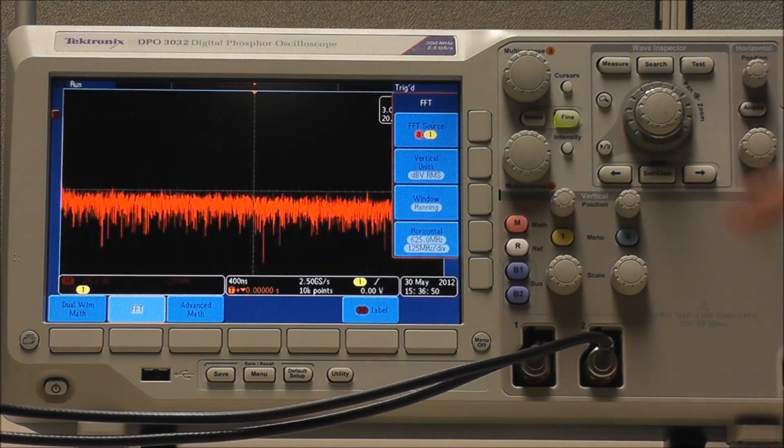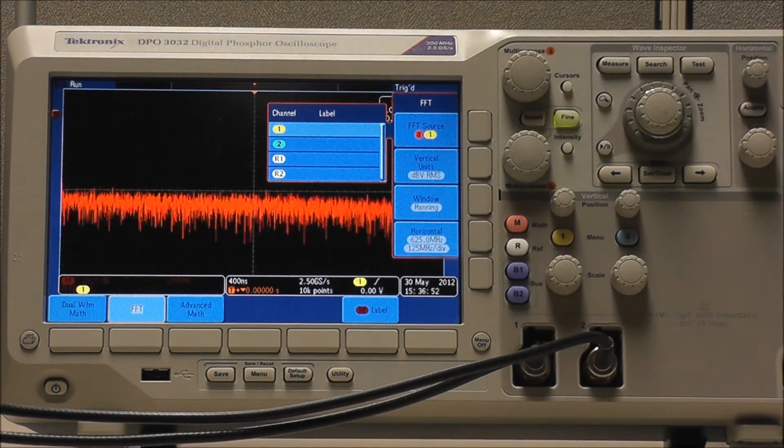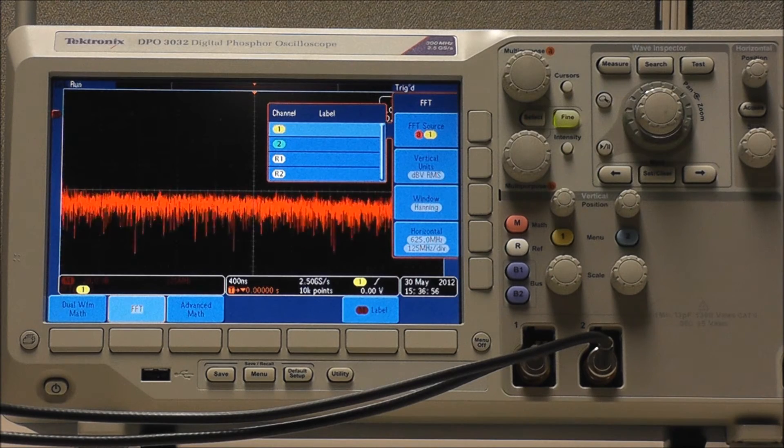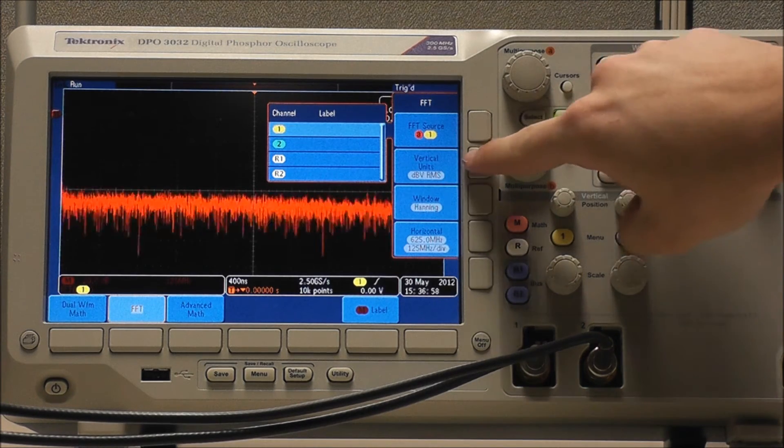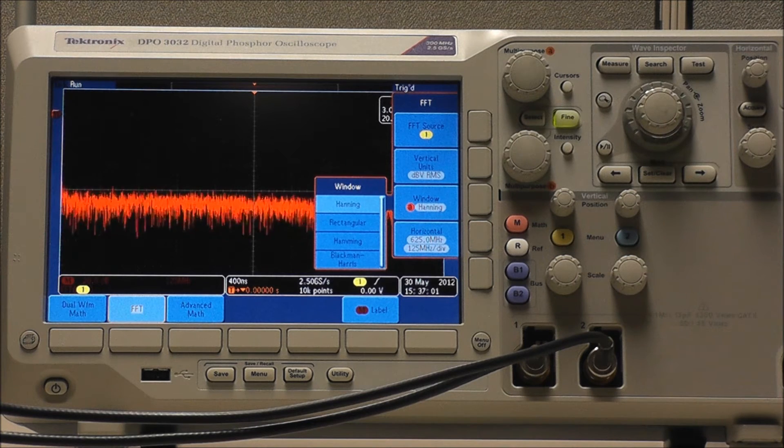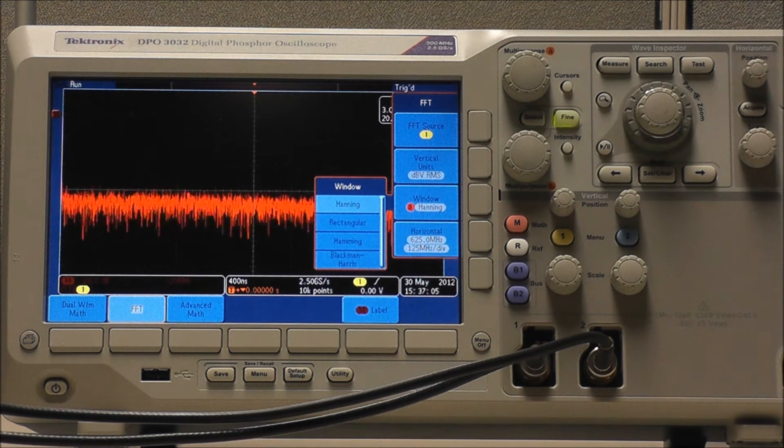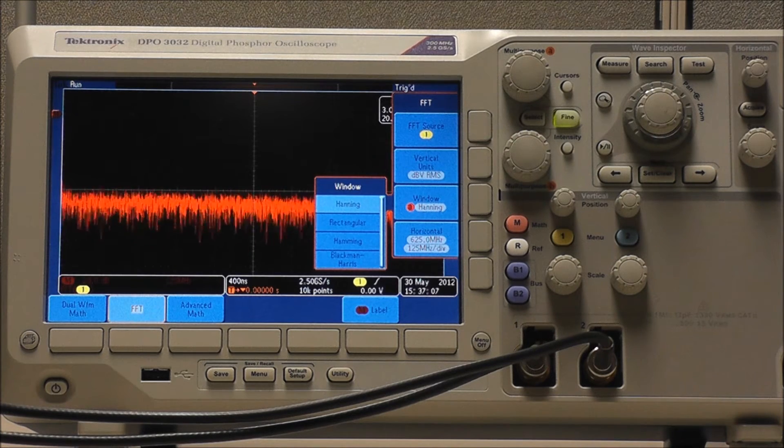Select fast Fourier transform, followed by fast Fourier transform source, and we can use multipurpose A to select our source, which will be channel 1. We also have the option of selecting our units and our window, again using the multipurpose A control. If you'd like to learn more about units and window, you can find a great deal of information about it in the user's manual.